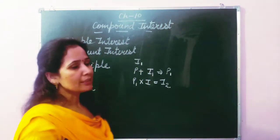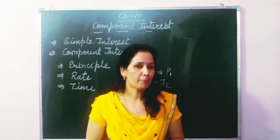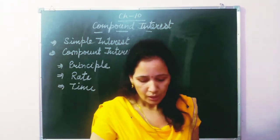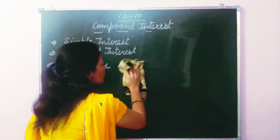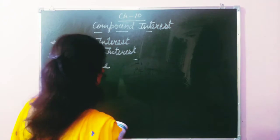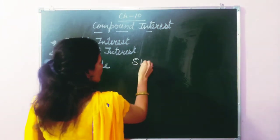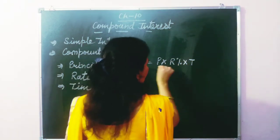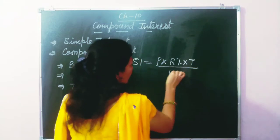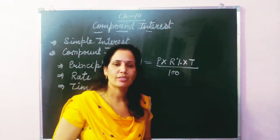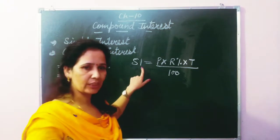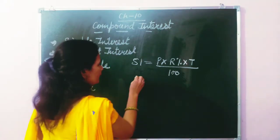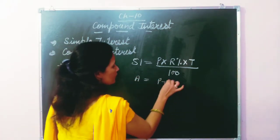So let's start. In this chapter we are going to calculate compound interest in two ways. The first exercise is based on the simple interest formula. To find simple interest: Principal multiplied by Rate percent, multiplied by Time, divided by 100. Using the simple interest formula, we will find out the interest annually, and then add this interest to the principal to get the amount. Amount equals Principal plus Interest.